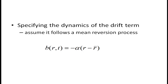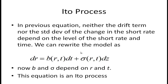We want to specify the dynamics of the drift term, and we're going to assume mean reversion. Mean reversion means that when rates are high they'll probably go back to being lower, and when rates are very low they'll probably go up. This is common not just in finance but in many areas of life — when you're above or below the average you tend to move back toward it. As this video is being made, interest rates are very low and likely to go up, just as the very high rates of the early 1980s eventually came down.